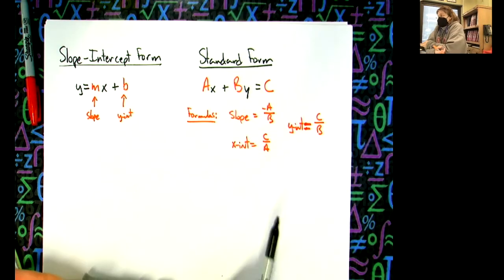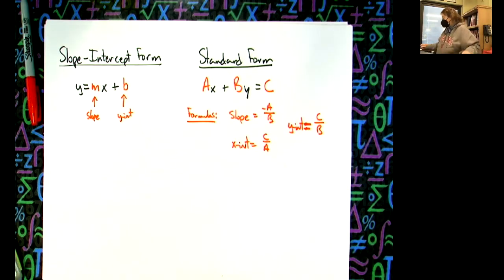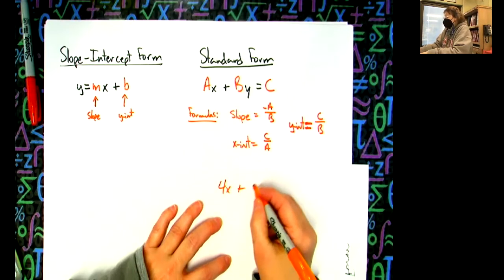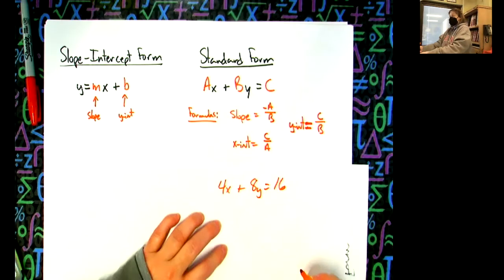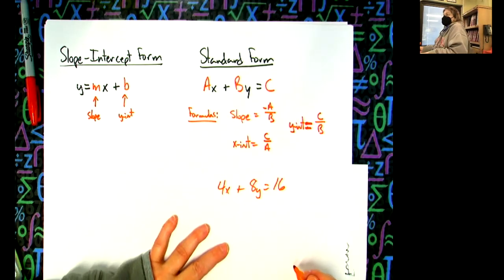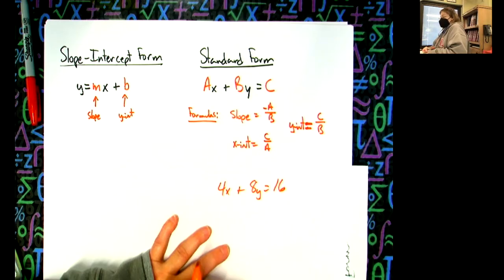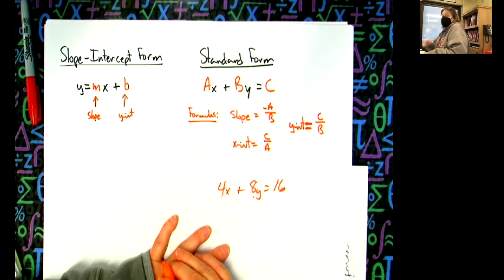So if I had 4x plus 8y equals 16, real quickly: what's the x-intercept? See how quickly you can find the x and y intercepts — that's why I love this one. Can you do the slope in your head really fast? Negative A over B: negative 4 over 8 reduces to negative one-half. So slope is negative one-half, and I didn't have to do any math — I could do it all in my head.